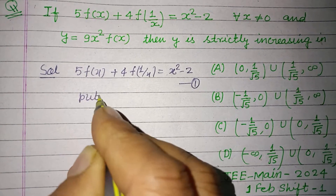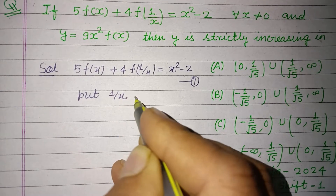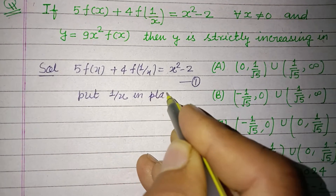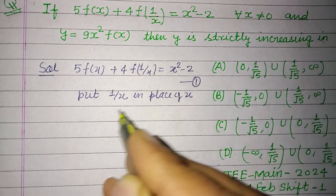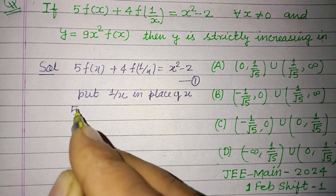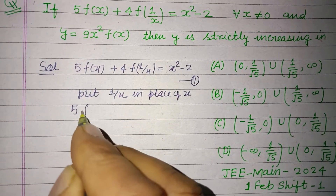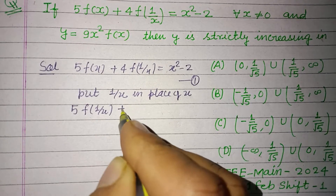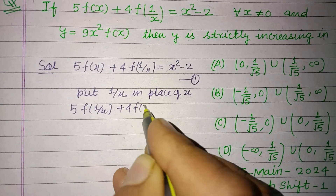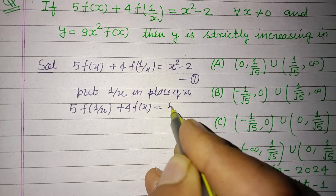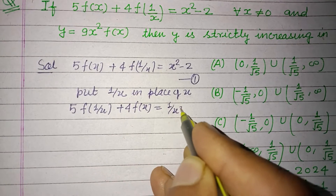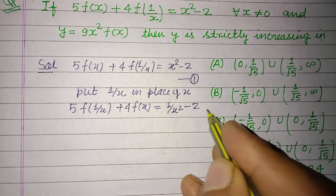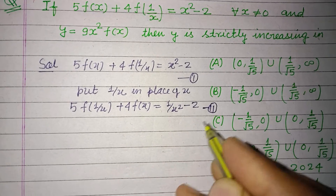Now put 1/x in place of x. We will get 5f(1/x) + 4f(x) = 1/x² - 2. This is our second equation.